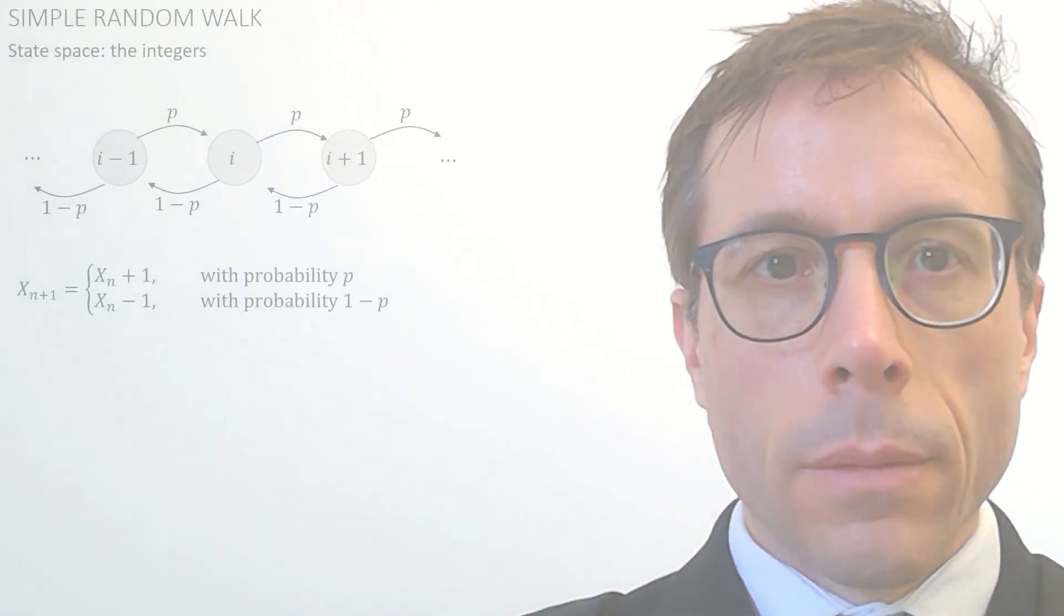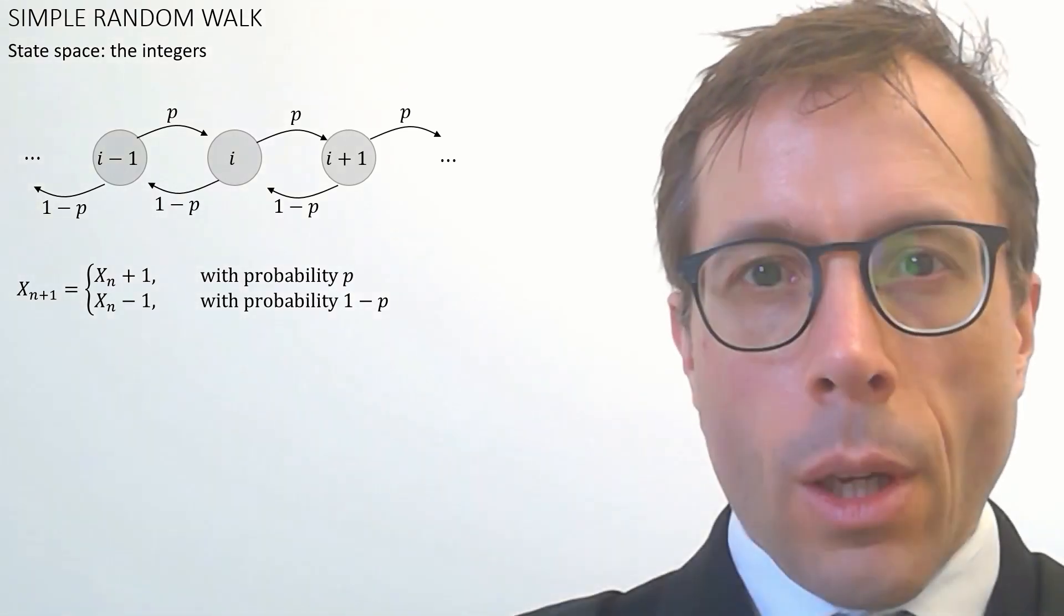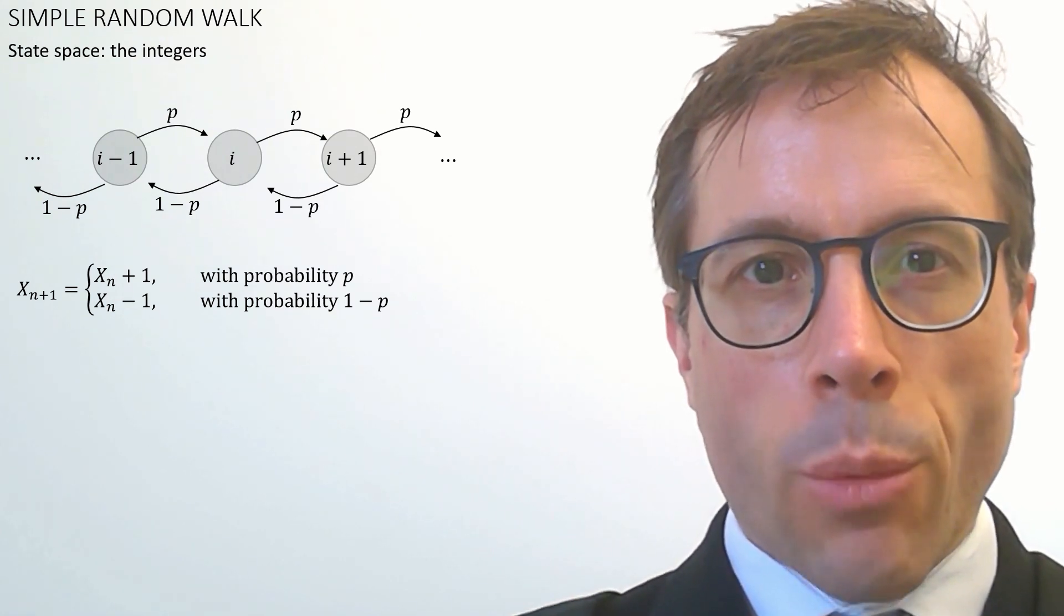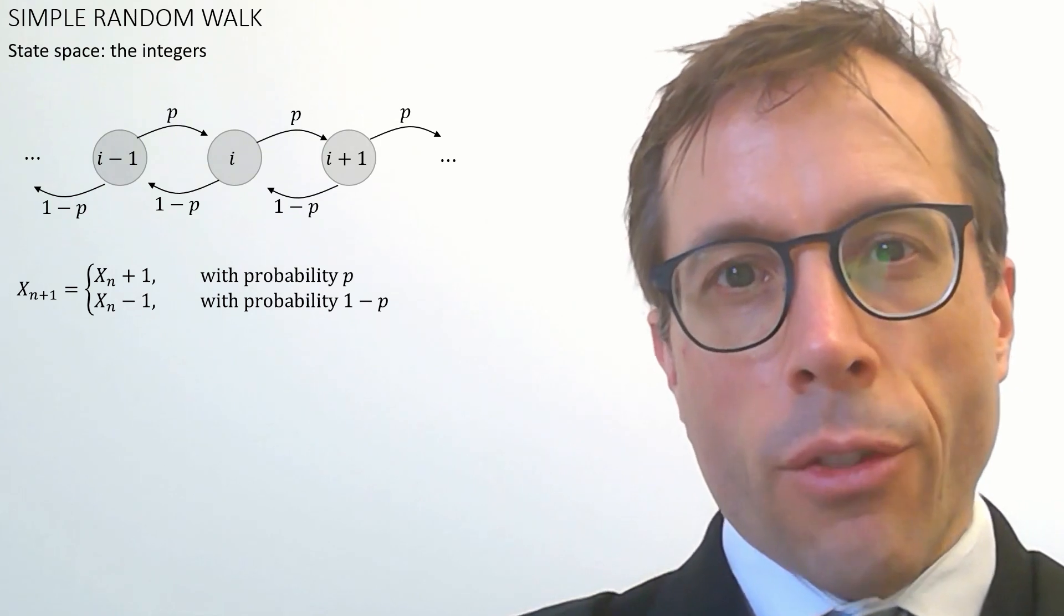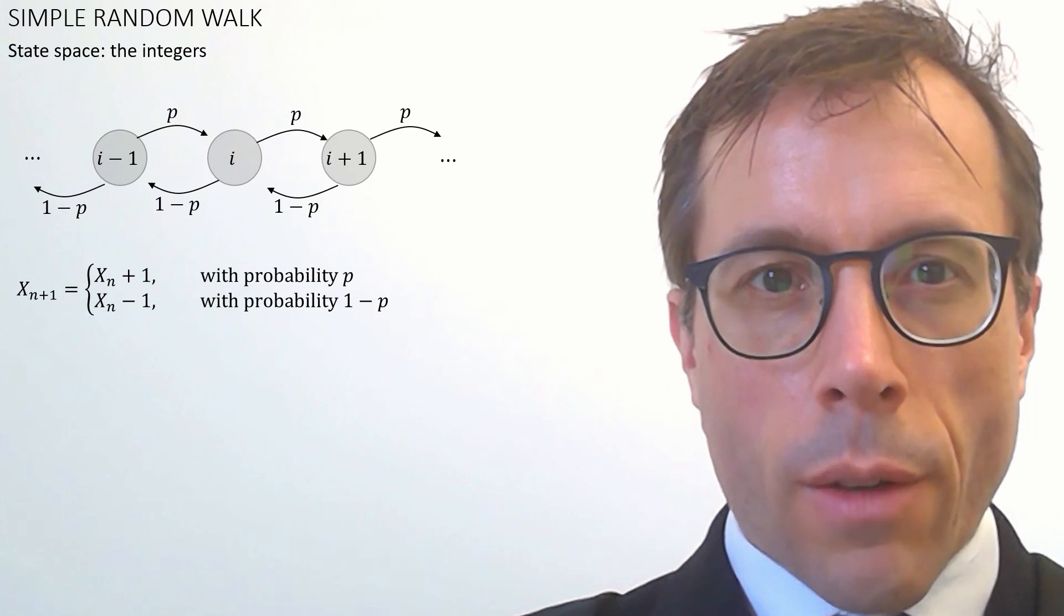Okay, next example. This one's called a simple random walk on the integers. We start at some specified initial value, say 0, then each time step we either jump plus 1 or minus 1. The point here is we're allowed to have Markov chains with infinite state spaces that don't just have to be finite graphs.